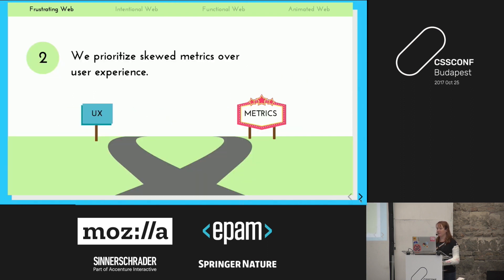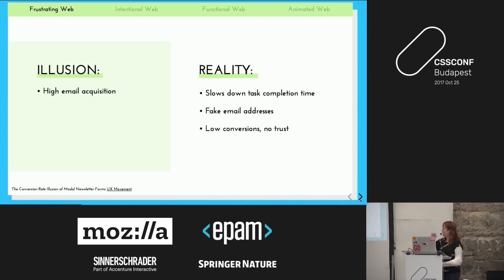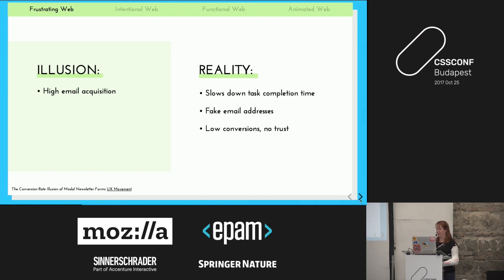The second thing is that we prioritize business goals and metrics over the user experience. Take pop-ups — a really common tool to get email acquisition. There are blog posts about how successful they are: you get 20 or 30 percent more emails. But everybody hates them. You're getting in the way of the person's task, so even if they get past your pop-up they're frustrated and might not come back. People put fake email addresses in, and even those who give a real email won't open your messages because they didn't really choose to opt in.